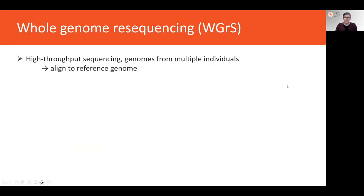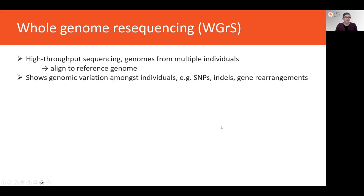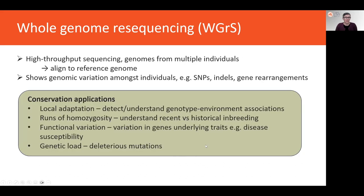Whole genome resequencing is another genetic data type focused on obtaining genome information from multiple individuals. Genetic data is generated for different individuals and then aligned to the reference genome — again showing the value of reference genomes in enabling other genetic methods. It is particularly focused on assaying genetic variation between individuals, such as SNPs, indels, or gene rearrangements. In conservation, it is a valuable method providing high resolution for understanding local adaptation amongst populations and genotype-by-environment associations important in making translocation decisions. It also provides detailed information about inbreeding using runs of homozygosity.